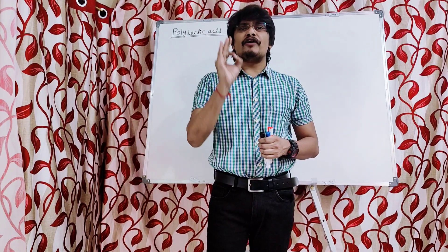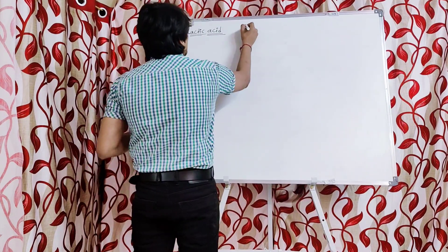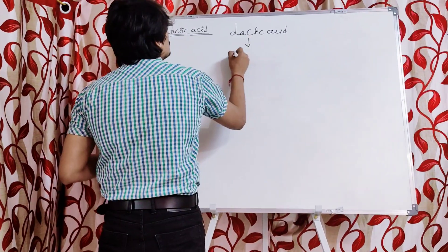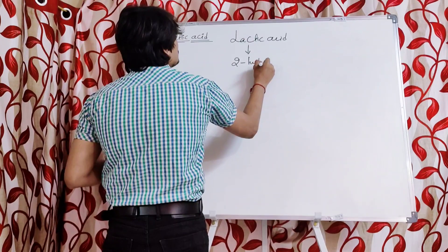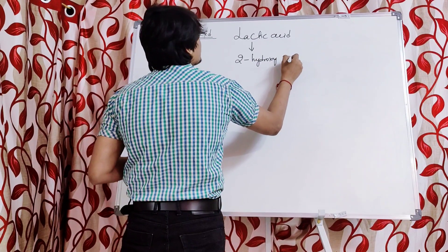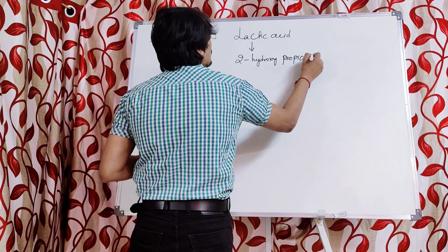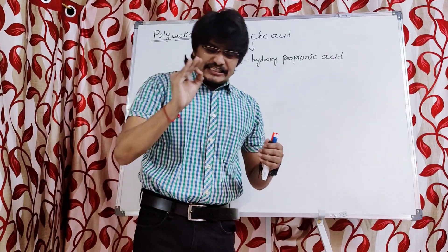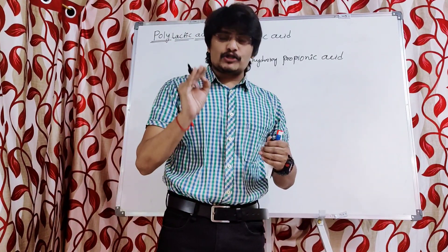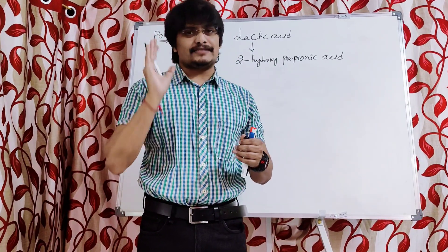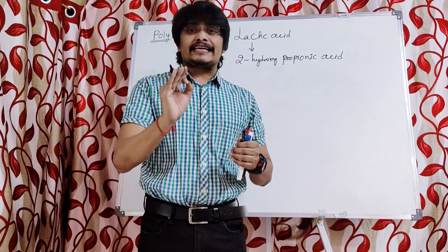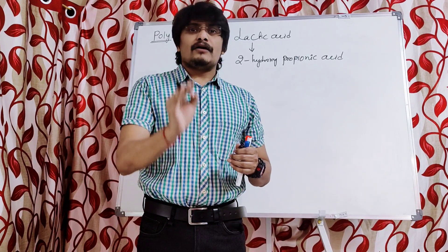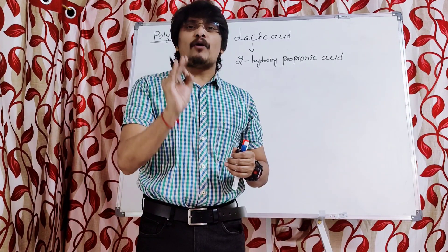What is the IUPAC name of lactic acid? Lactic acid is 2-hydroxy propionic acid. You have to remember it as 2-hydroxy propionic acid in order to get the structure of polylactic acid. Lactic acid is the commercial name, whereas 2-hydroxy propionic acid is the IUPAC name.